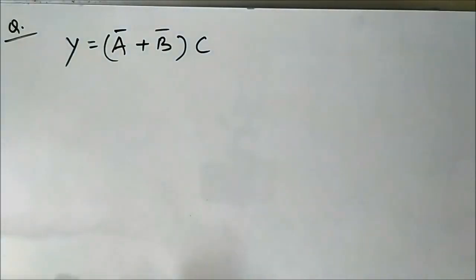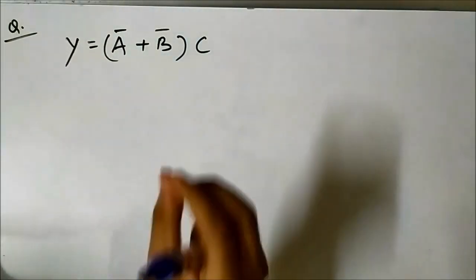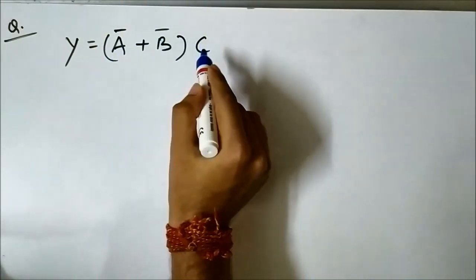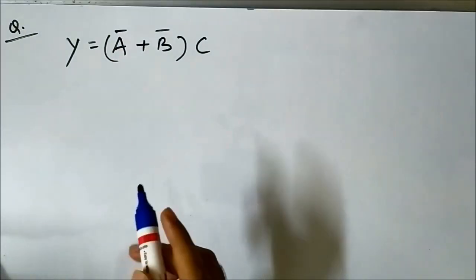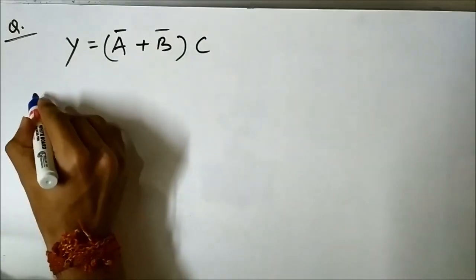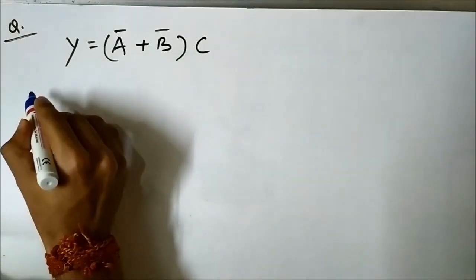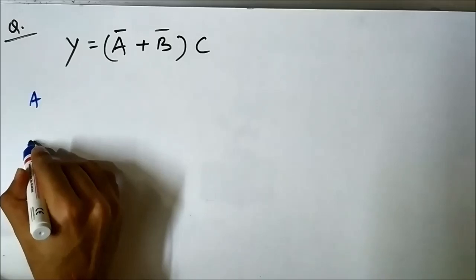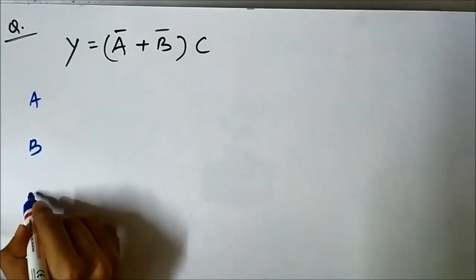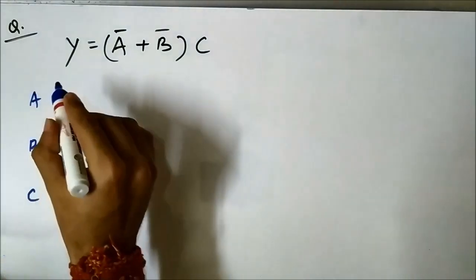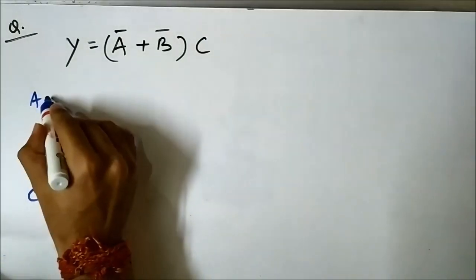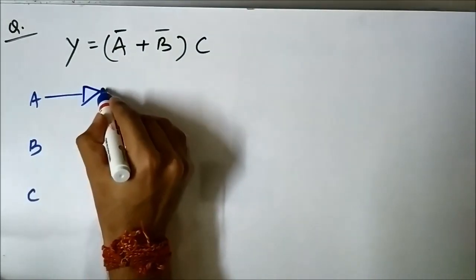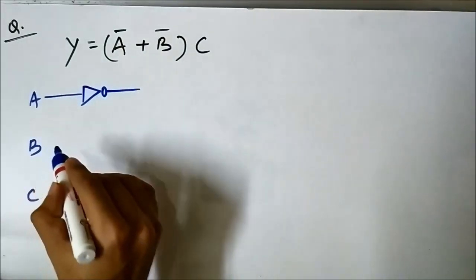The signal values here are A, B, and C — three signal values are present. Now, for A-bar we have to pass A through a NOT gate or inverter.